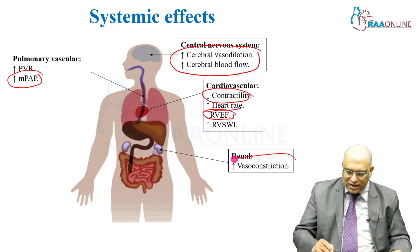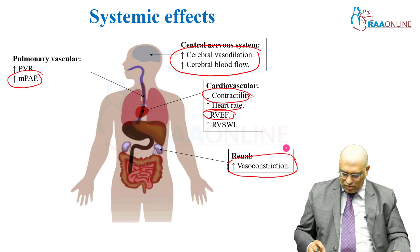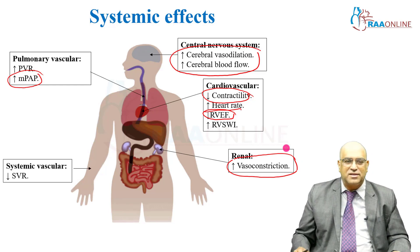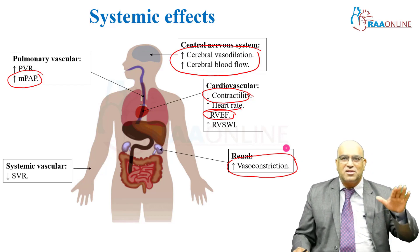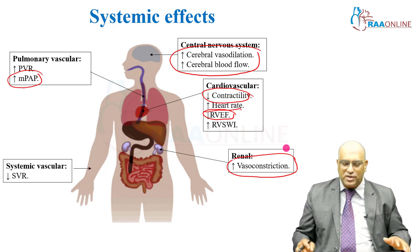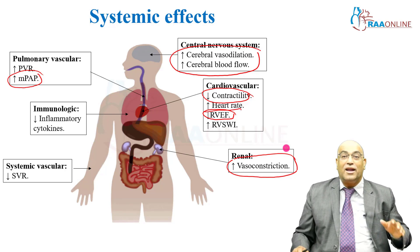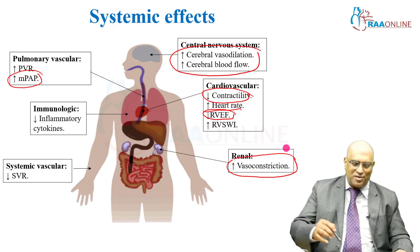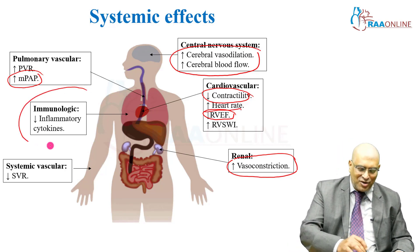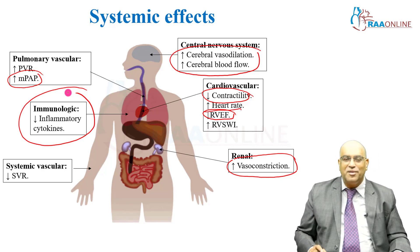In the renal system, it increases vasoconstriction. Systemic vascular resistance comes down with hypercarbia, and the only thing which is beneficial with hypercarbia is that it reduces inflammatory mediators.